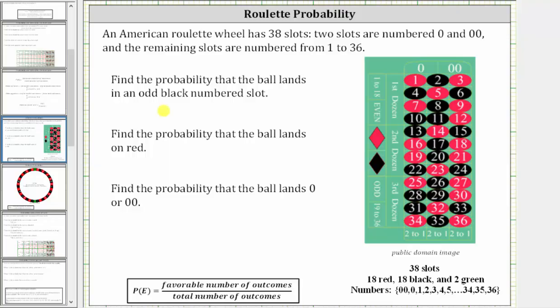We want to begin by determining the probability the ball lands in an odd black numbered slot. So looking at the table, we want to find the odd black numbers. Remember odd numbers are one, three, five, seven, and so on.